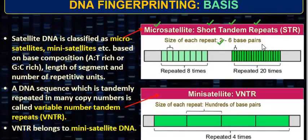Micro satellites are the short tandem repeats. Satellite DNA is classified as micro satellite, mini satellite, etc., based on the base composition — that is AT-rich and GC-rich — the length of the segment, and the number of repetitive units. How many times repetition is happening in one sequence and what length is happening in one sequence. Based on these parameters, we call it micro satellite. In micro satellites, there are fewer repetitions — from 6 to 20 repeats.